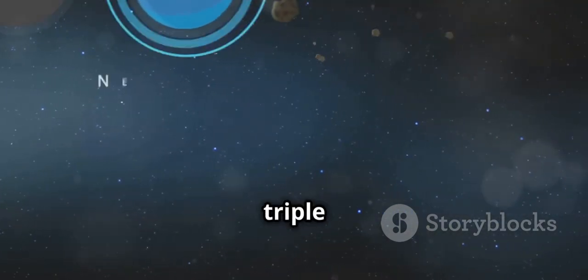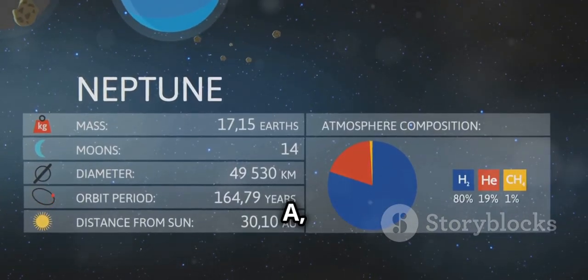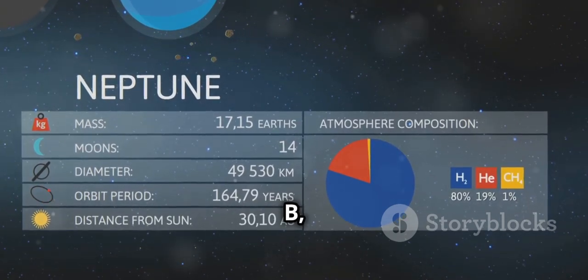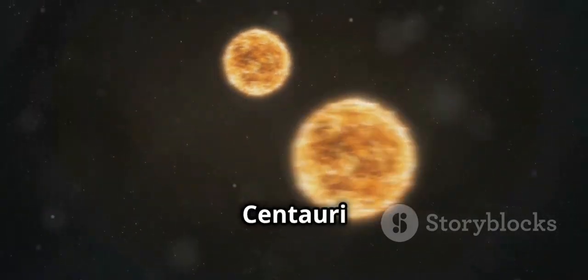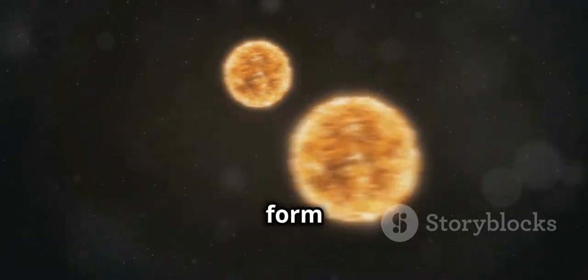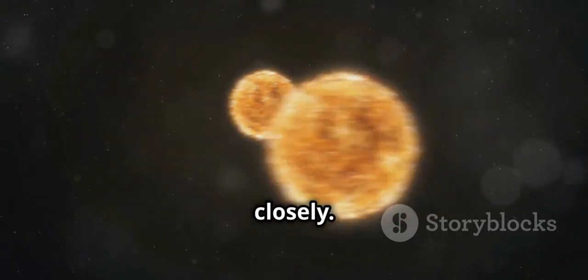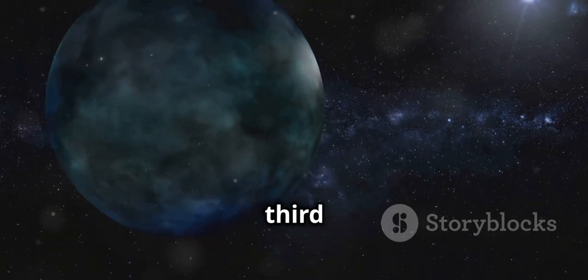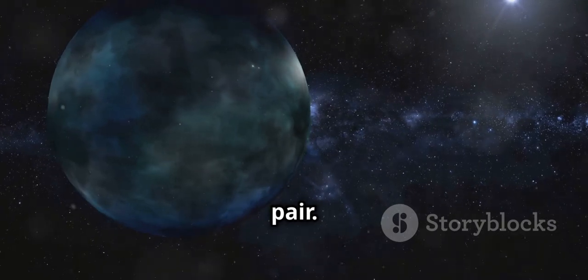Alpha Centauri is a triple star system consisting of three stars: Alpha Centauri A, Alpha Centauri B, and Proxima Centauri. The first two stars, Alpha Centauri A and B, form a binary system, meaning they orbit each other closely. Proxima Centauri, the third star, is a red dwarf that orbits at a much greater distance from the binary pair.